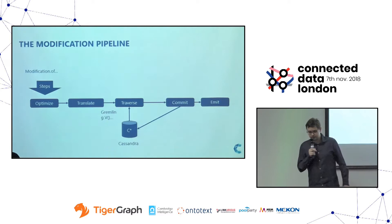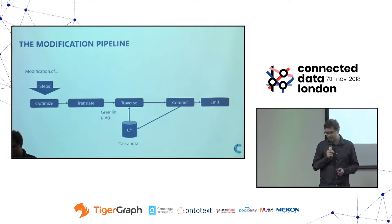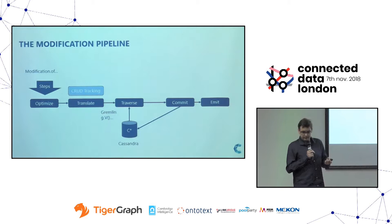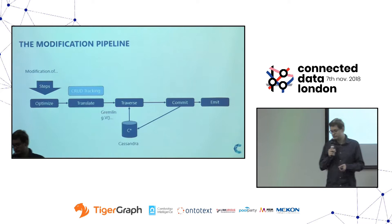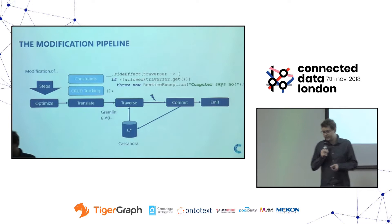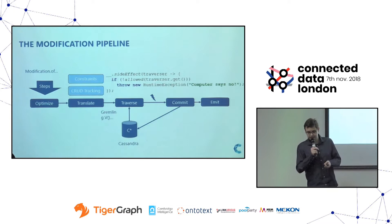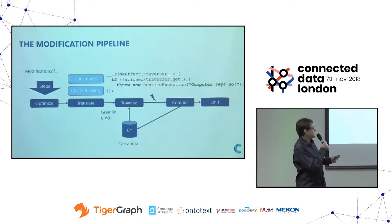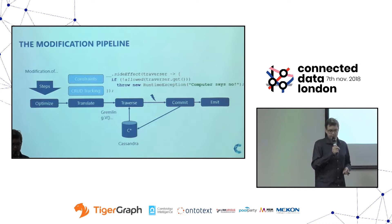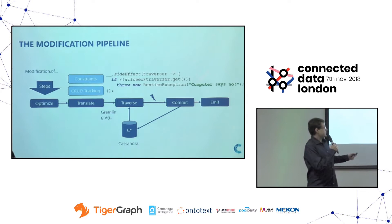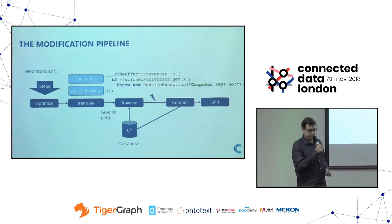For modifications it's quite similar. Two aspects to highlight: first, because we have a central layer, we know about all graph operations — which elements are created, which are deleted, and so on. Second, we can implement constraints, because JanusGraph together with Gremlin allows us to embed arbitrary Java code. We can inspect the current element, and if unhappy with a value — for example in case of a constraint violation — we just throw an exception, which prevents a commit back to the database, effectively giving us the ability to build constraints.